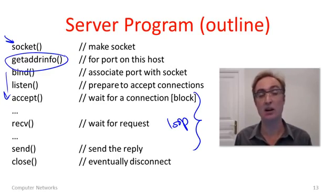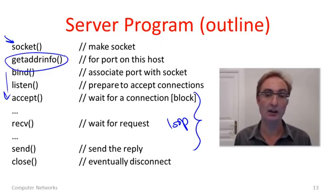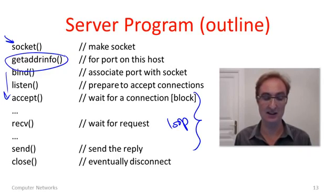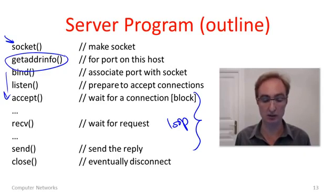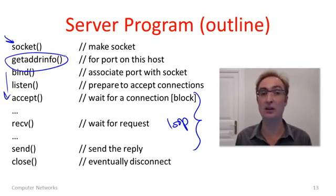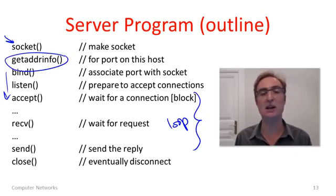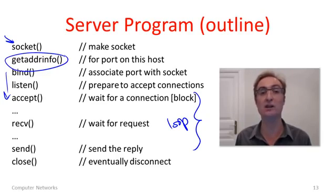And that's it — we now have our client and server pattern. Note that if you're writing this as actual code, there's a lot of detail omitted here, including all parameters in C, Java, Python, or any language, as well as code to handle error conditions. But this is the heart of the program, and by using this pattern you can begin exploring your own client-server programs.